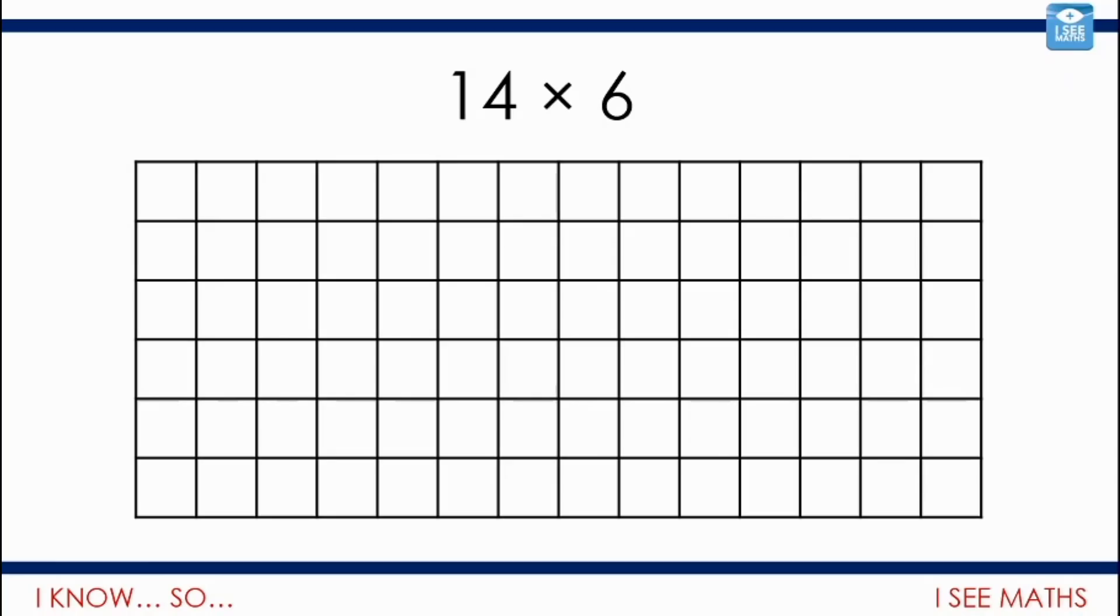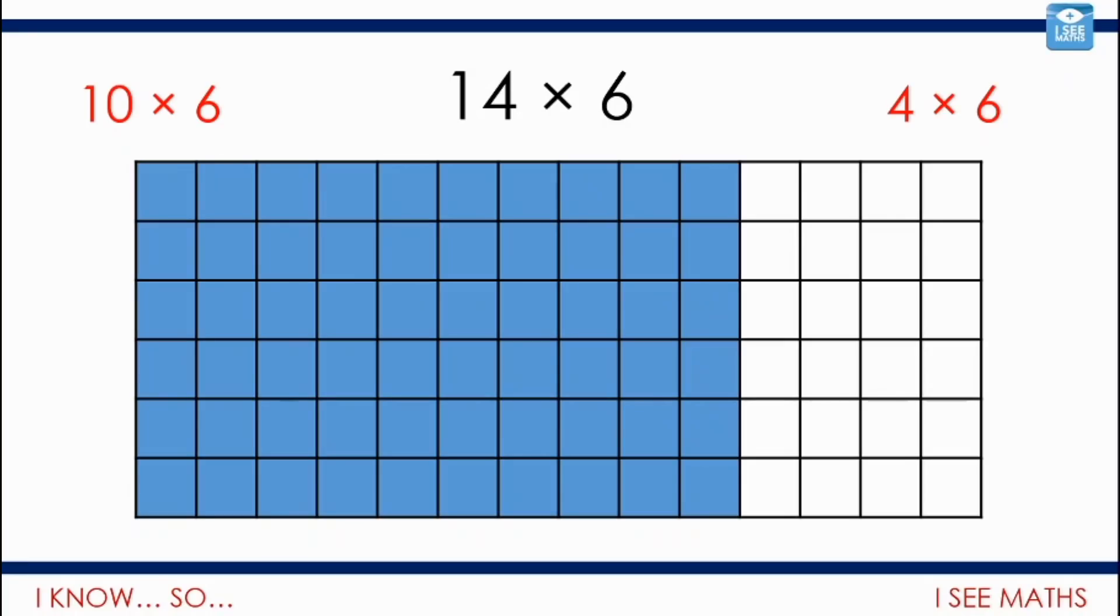So, this grid shows 14 squares along the top, and it's 6 lots of 14. So, I could break that down in different ways to calculate. I might decide to break the 14 down into a 10 and a 4. So, I've got 10 lots of 6, and then I've got 4 lots of 6. And I could work out the areas of each section. There must be 60 that are blue and 24 that are white.